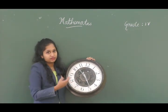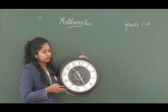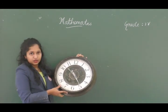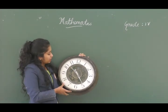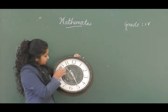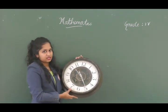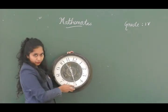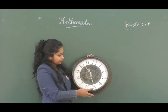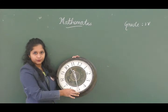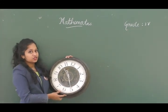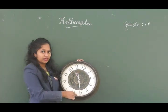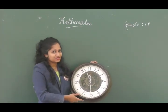The bigger divisions — that is, the numbers — represent hours. One number represents one hour. The hour hand has passed 10, so it is 10 hours. The minute hand has reached 5, so that means it is 5 times 5, which is 25 minutes. So the time is 10:25.